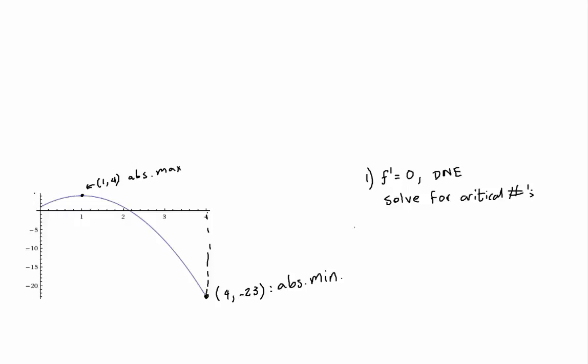And then you're going to evaluate f at endpoints and critical numbers. And then here you choose which are the largest is your absolute max and the smaller is the absolute min.